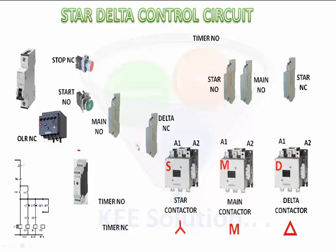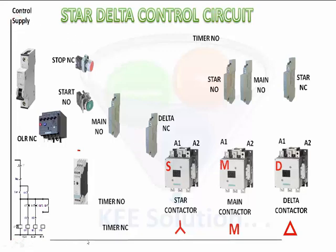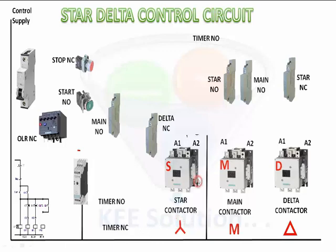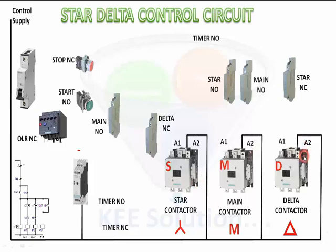First we give a neutral supply to all the components — to the timer, then star contactor A2 side, main contactor A2 side, and delta contactor A2 side. So neutral is connected.